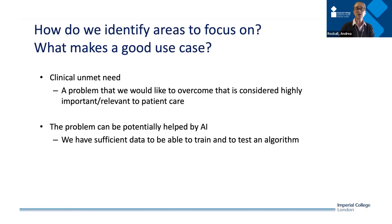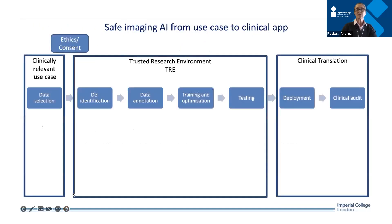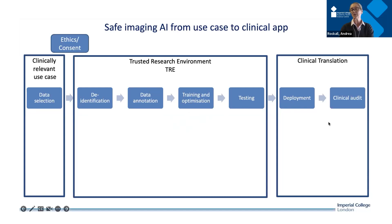We need to identify these areas, but we can't solve all problems. We need to be sure we have a problem that can potentially be helped by AI, and sufficient data to train and test an algorithm. If we have an important, difficult problem but don't have sufficient data, it's probably not the right step. The process goes from identifying a clinically relevant use case, selecting data, de-identification, annotating the data, training and optimizing the tool, testing, and then clinical translation with deployment and auditing.